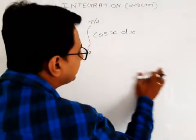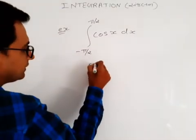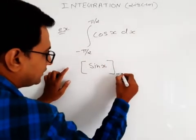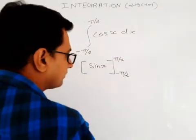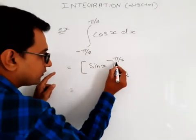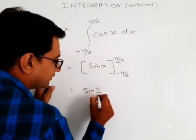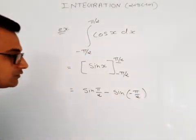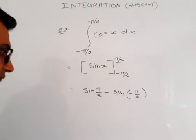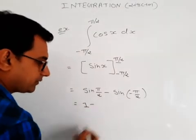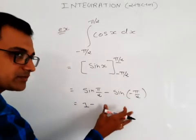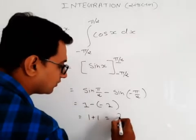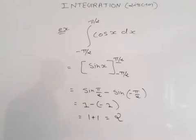Now: integration of cos theta — or sin x — with limit minus pi by 2 to plus pi by 2. Make a box on both sides with the limits. First put the top limit: sine of pi by 2 — minus — then put the bottom limit: minus sine of minus pi by 2. So: sine pi by 2 minus sine of minus pi by 2. Sine pi by 2 equals 1. Sine minus 90 equals minus 1. So: 1 minus (minus 1) equals 1 plus 1 equals 2. The answer is 2.